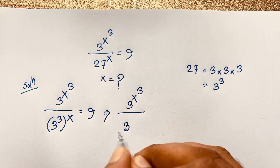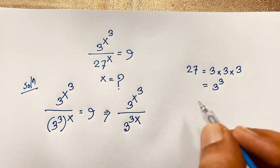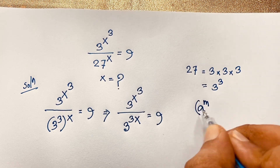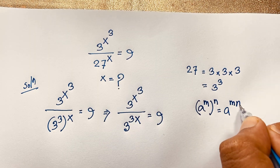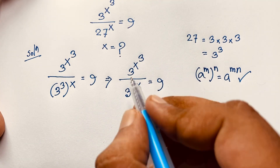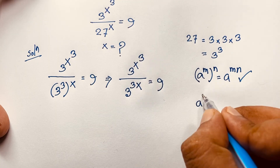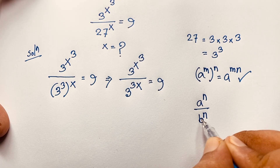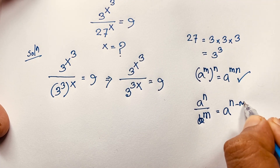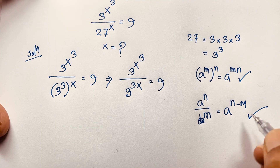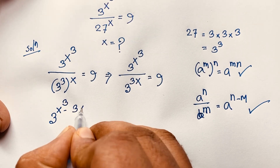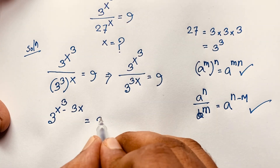That gives us 3 to the power 3 times x, which is 3x, according to the exponential formula: a to the power m, whole to the power n, equals a to the power mn. Applying this formula, we get 3 to the power x cubed over 3 to the power 3x. Since the bases are the same, I subtract the exponents: 3 to the power (x cubed minus 3x) equals 9, which equals 3 to the power 2.